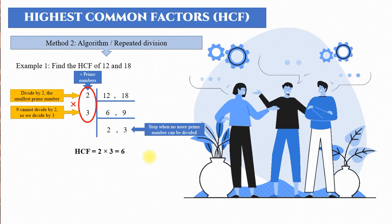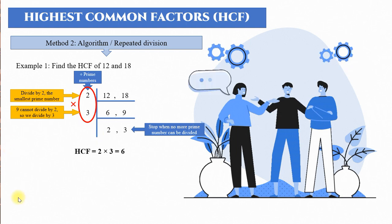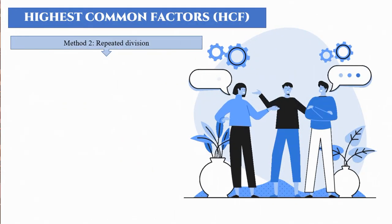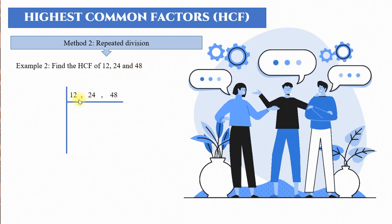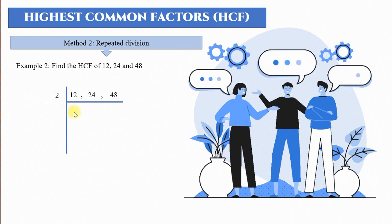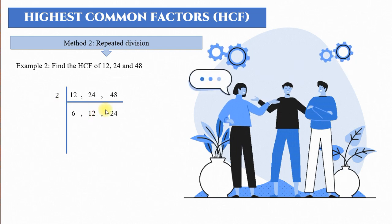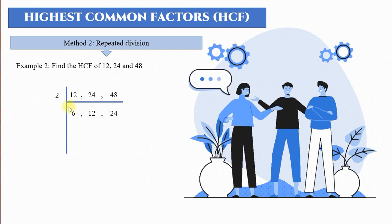This algorithm or repeated division is the most popular method — it is the easiest and fastest. Rather than listing all the factors, which takes more time, this method is simpler. I recommend using this method. Now let's look at another example: find the HCF of 12, 24, and 48. We use repeated division. Write down 12, 24, and 48. The smallest prime that divides all three is 2. 12 divided by 2 equals 6, 24 divided by 2 equals 12, and 48 divided by 2 equals 24.